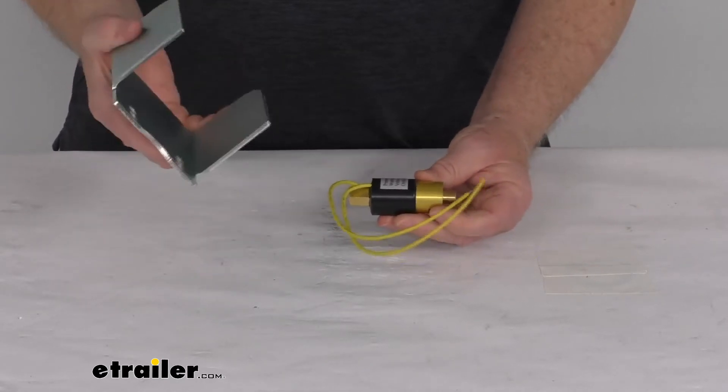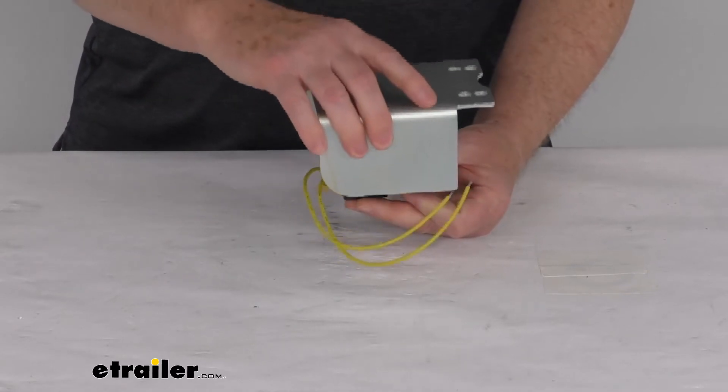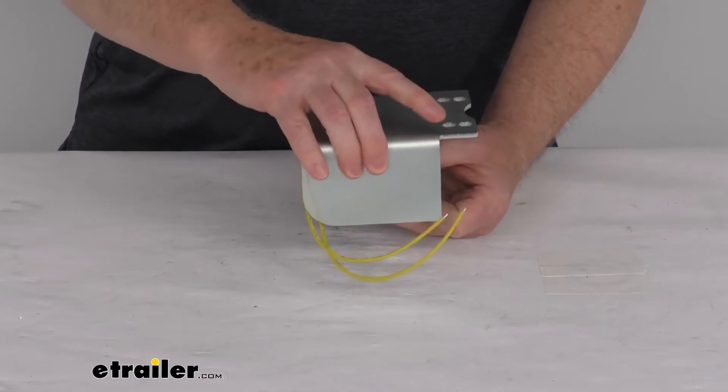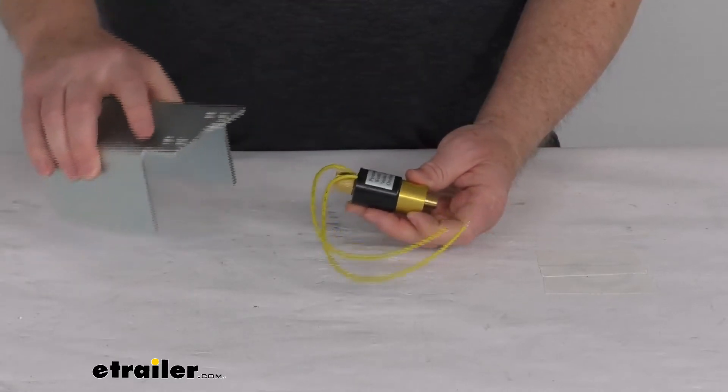Once this is installed then this cover will actually go over it and bolt to the back of the actuator and it goes over the solenoid to protect it from getting any damage.